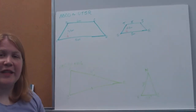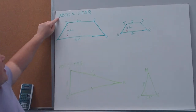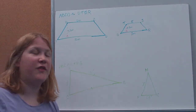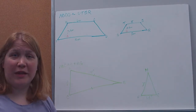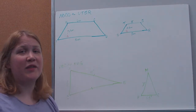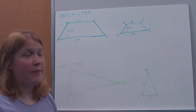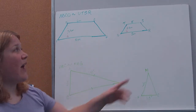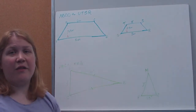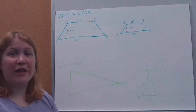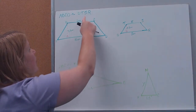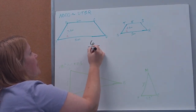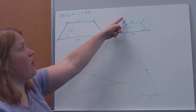So we're going to do a couple of examples using similar figures. ABCD is similar to UTSR, so these are similar figures with corresponding sides and corresponding angles. We can use these corresponding sides to solve for our unknown. All of our sides reduce to the same proportion. So if I don't know the length of TS, I can find it. I'm going to set up my proportion: 6 is corresponding to x, so I write that as a ratio: 6 over x.